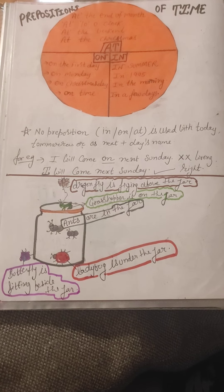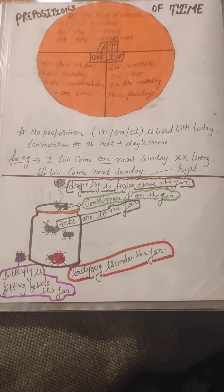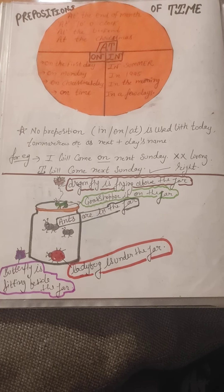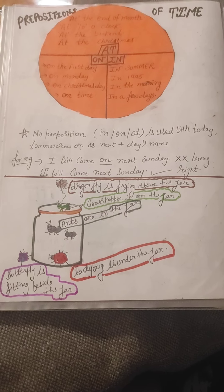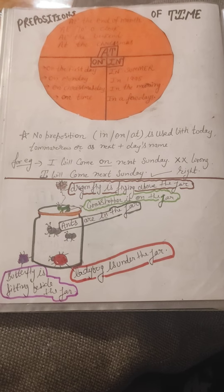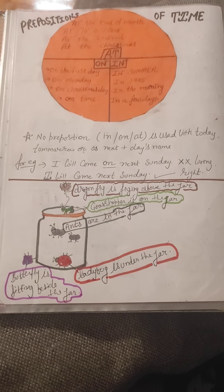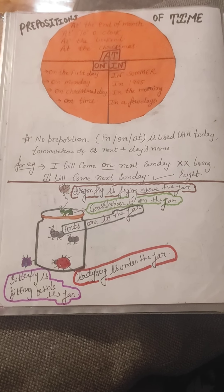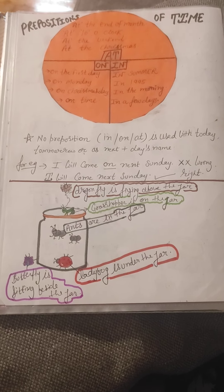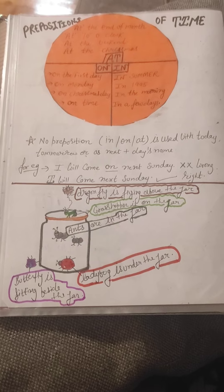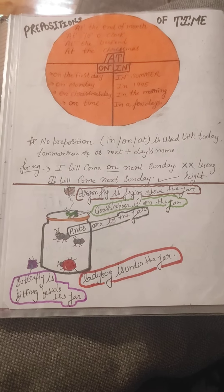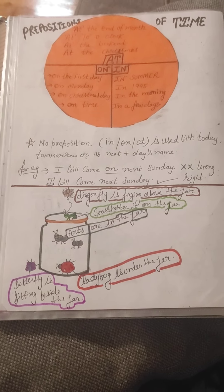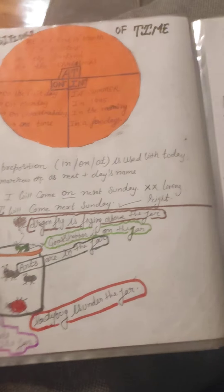Dragonfly is flying above the jar. Grasshopper is on the jar. Ants are in the jar. Ladybug is under the jar. Butterfly is sitting beside the jar.